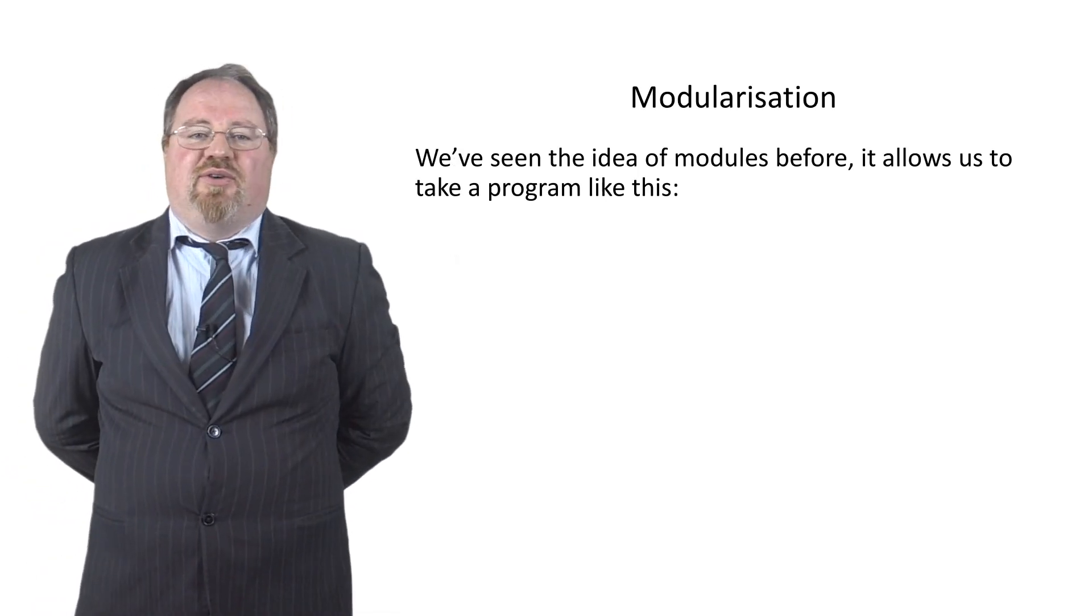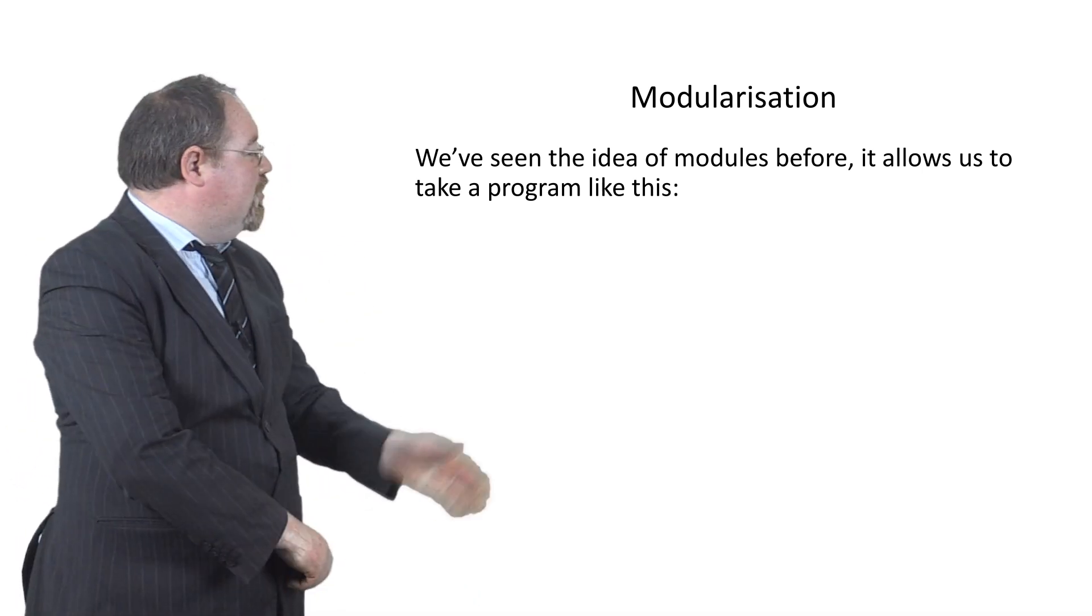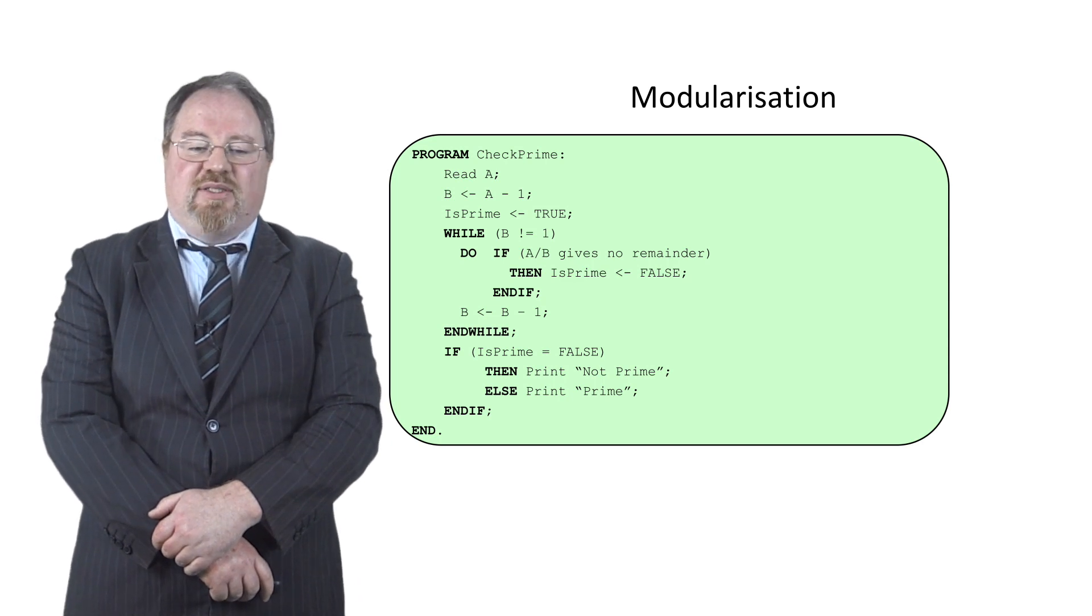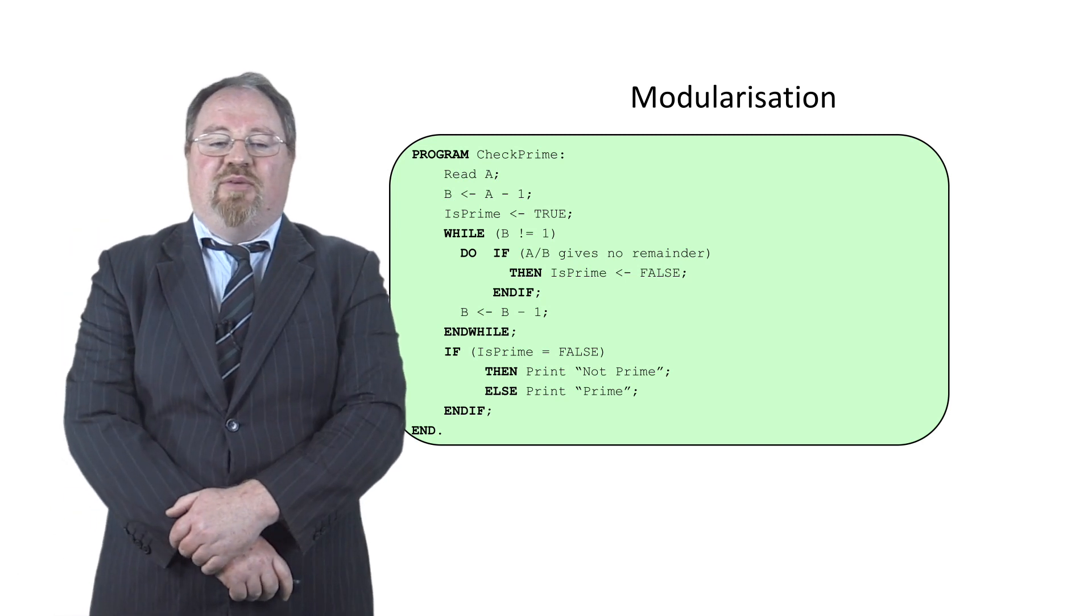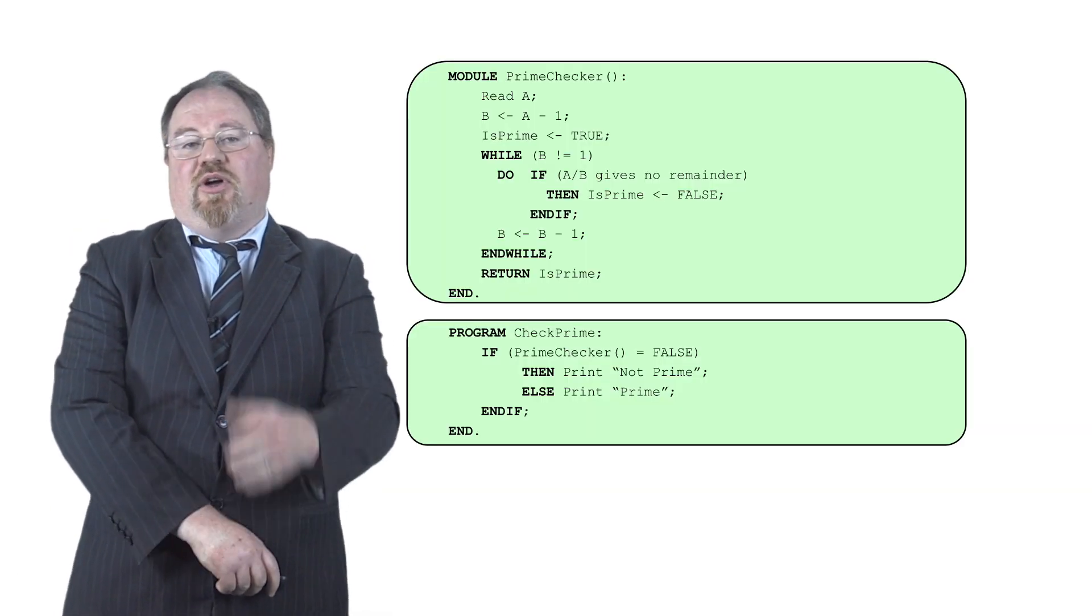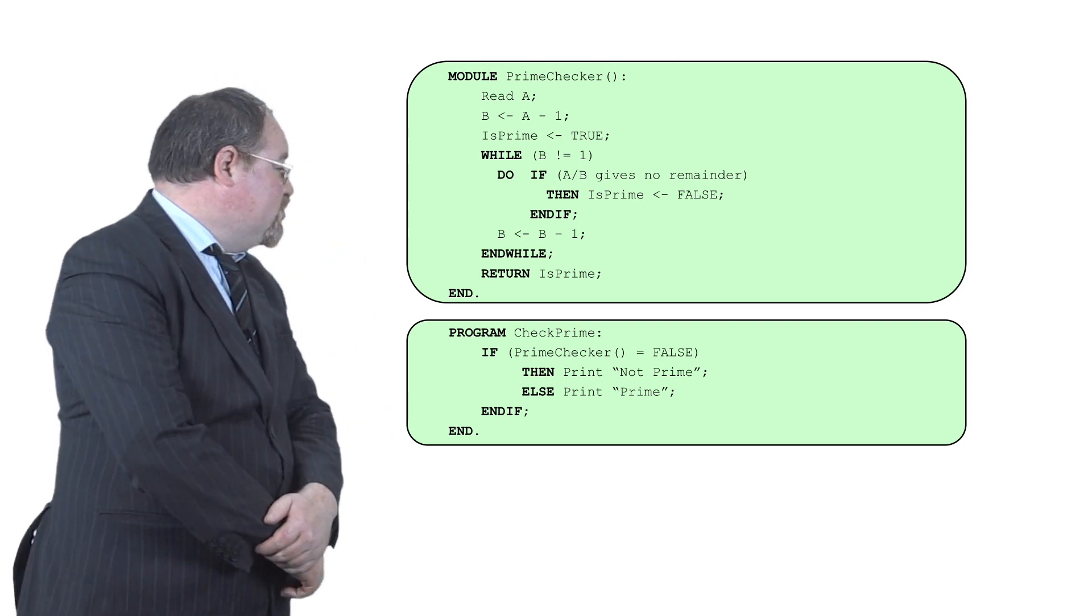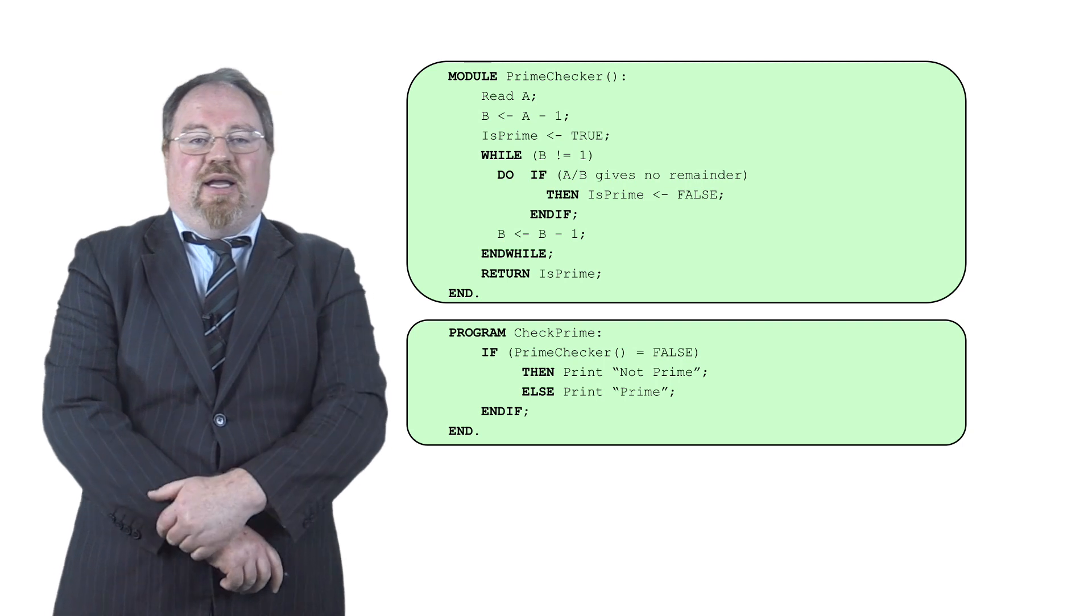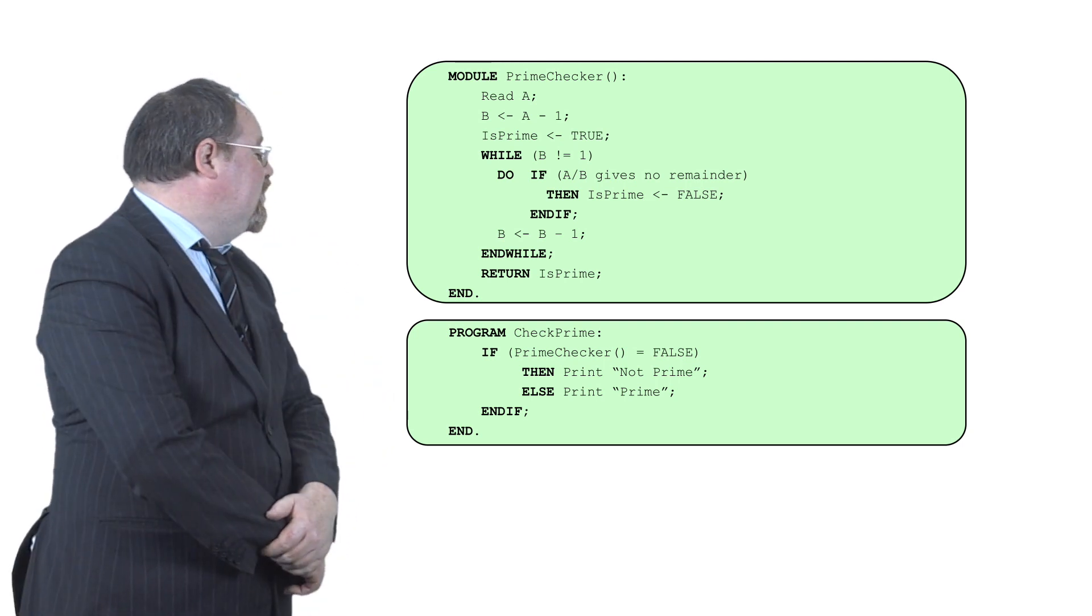We've seen a bit of the story already in terms of modularization. We know if we take a program like the prime number program, where we check if a number is prime or not, we can divide that up into two chunks. We've ended up with two modules, one called prime checker and the other called the overall program, which is check prime.